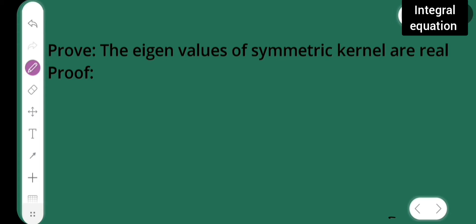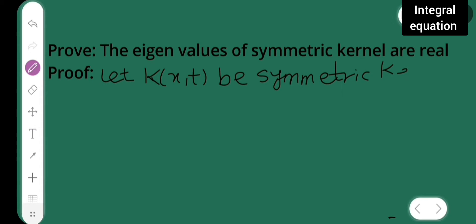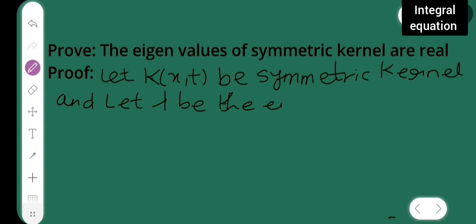I have to prove the eigenvalues of symmetric kernel are real. Let k(x,t) be a symmetric kernel and let lambda be the eigenvalues of kernel k.